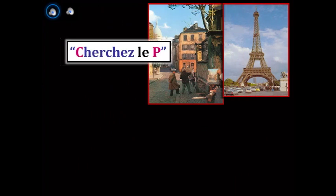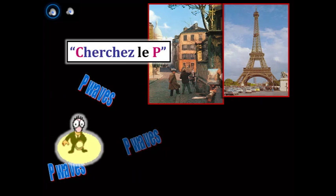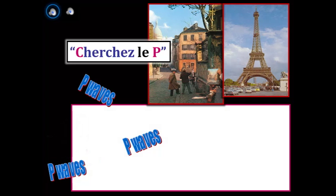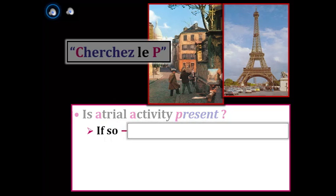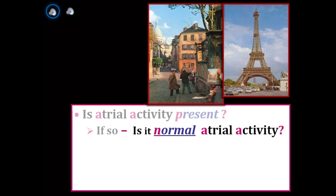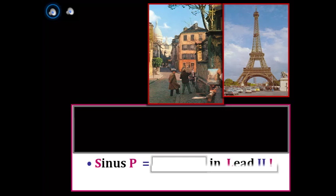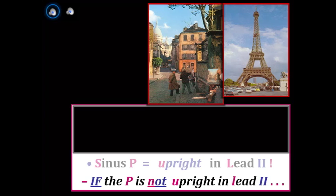When looking for P waves — or as the French say, 'il faut chercher le P' — we expand our search beyond forward-conducting P waves to also include fib waves, flutter waves, and retrograde P waves, looking for evidence of atrial activity. If atrial activity is present, we want to know if it represents a sinus mechanism. A key point: a sinus P wave in lead II should be upright. If the P wave is not upright in lead II, then you don't have sinus rhythm — with two exceptions.